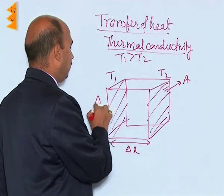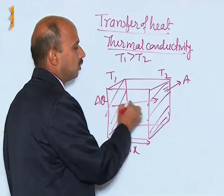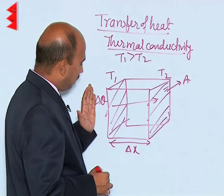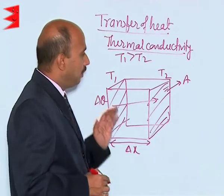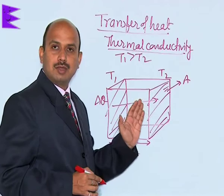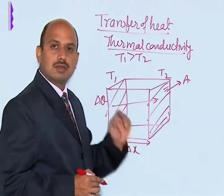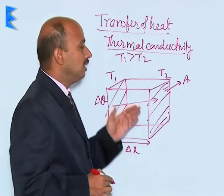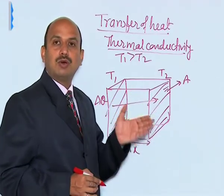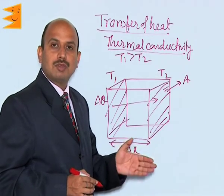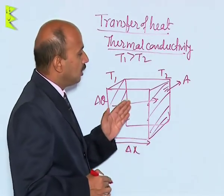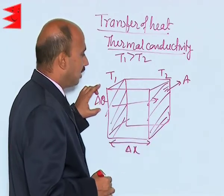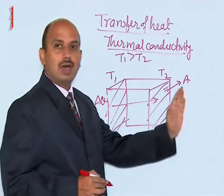When delta Q heat is given to one face, it is transferred to the other face. When heat is given at this face, every part of the body — this metal — absorbs the heat. But after some time a steady state is obtained, meaning each part of the body gains a constant temperature. When the temperature of each part becomes constant, whatever heat is given at one end transfers to the other end.